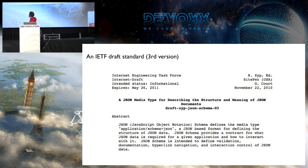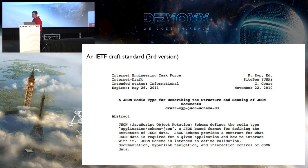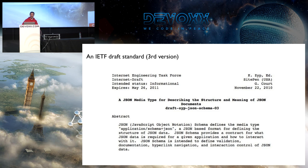JSON schema is also a draft standard published at the IETF. It has not changed much recently, but it is in its version 3. It's waiting — maybe one day — to become fully approved.